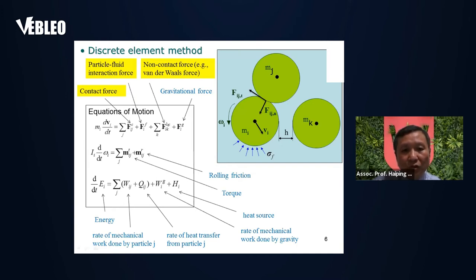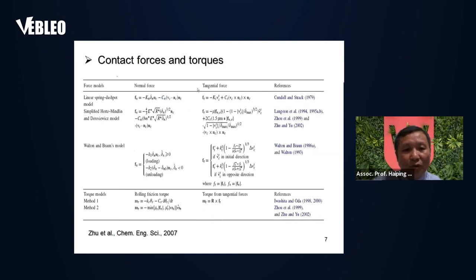For example, if the particle size is very small, we need to consider van der Waals forces. It is very important to determine the model for force. For torque, we need to consider the torque from tangential force, and we need to consider the rolling friction torque for some special cases as well. It is very important when considering the discrete element method to determine the force model. There are a couple of force models which have been used widely in the simulation of particulate systems — we have linear models and non-linear or more complicated models.